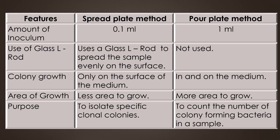The amount of inoculum required for the spread plate method is 0.1 ml, and the amount of inoculum required for the pour plate method is 1 ml. The spread plate method uses a glass L-rod to spread the sample evenly on the surface, but the glass L-rod is not required for the pour plate method.